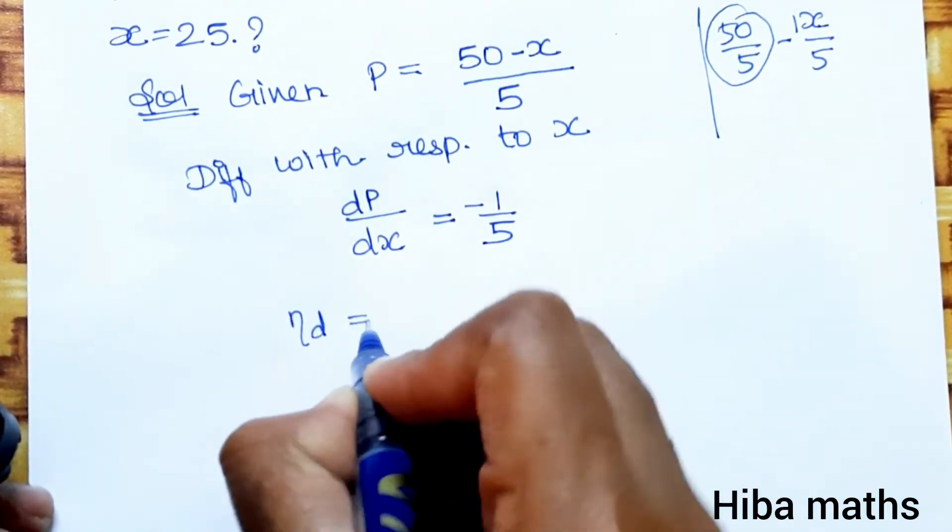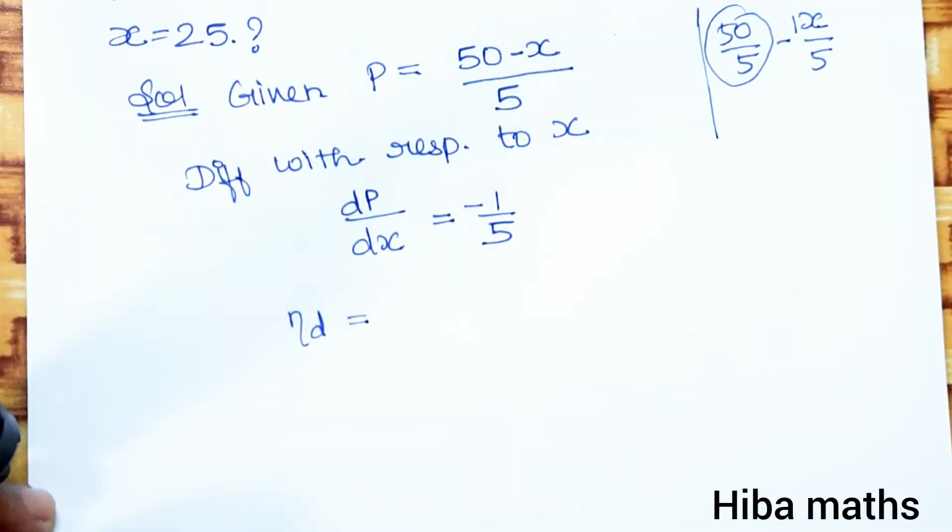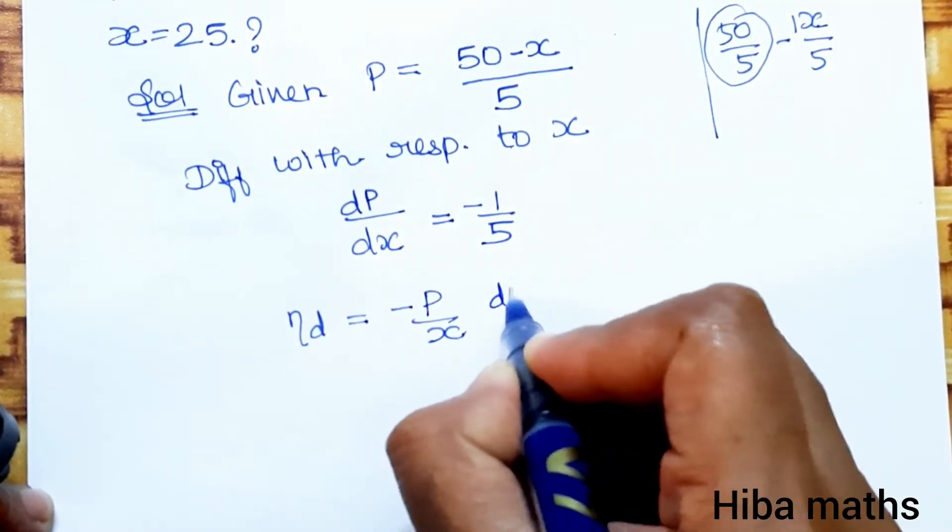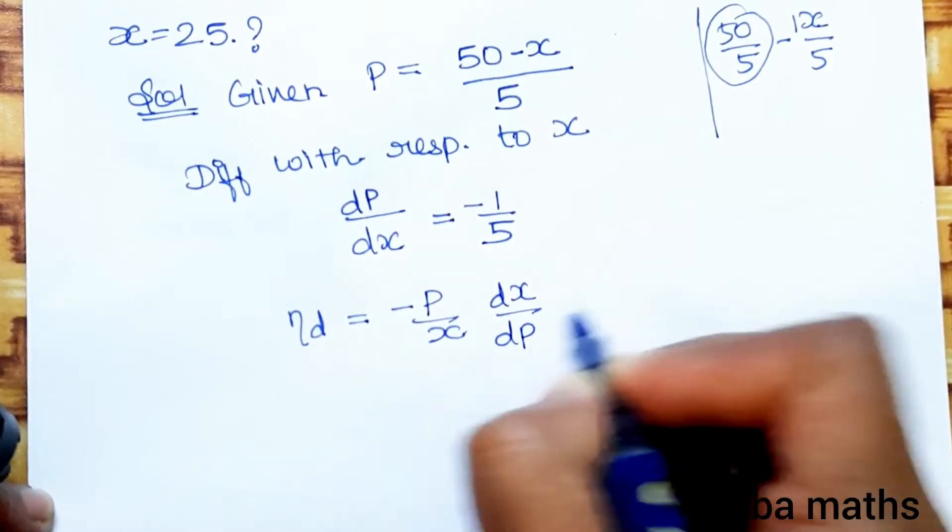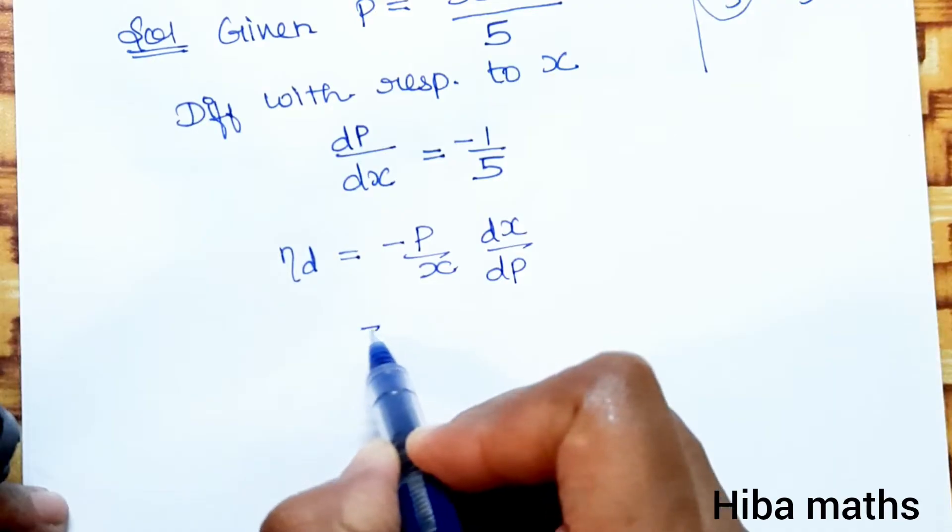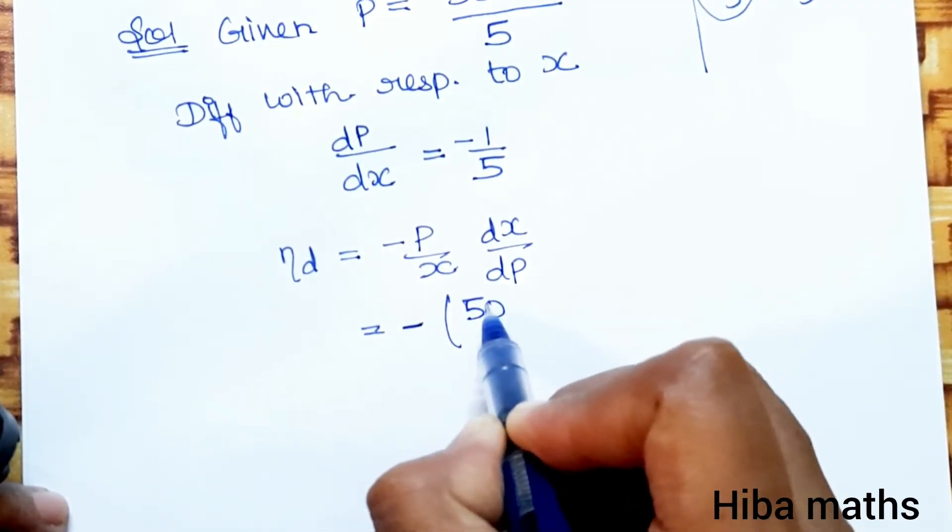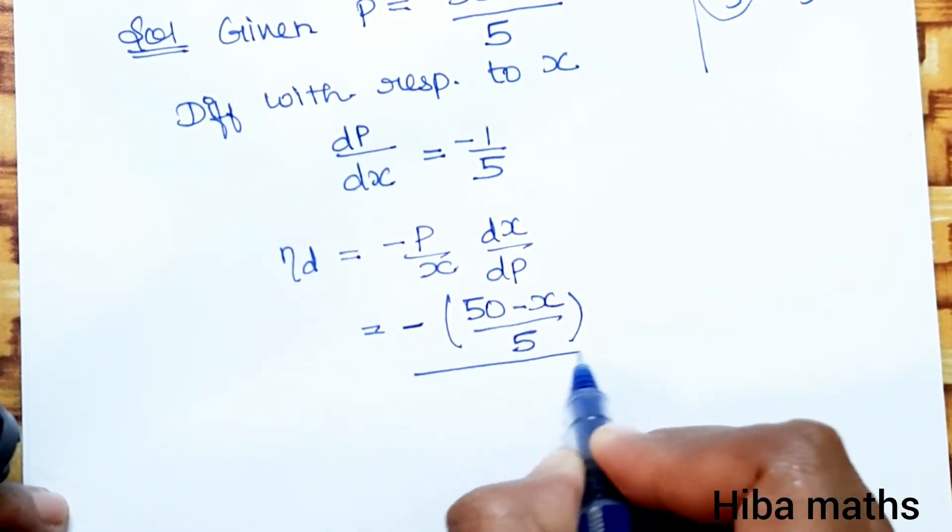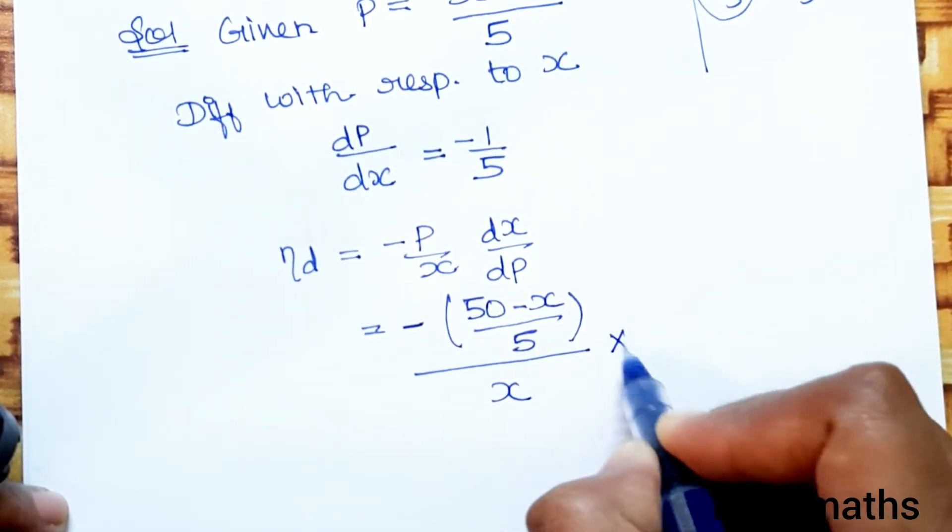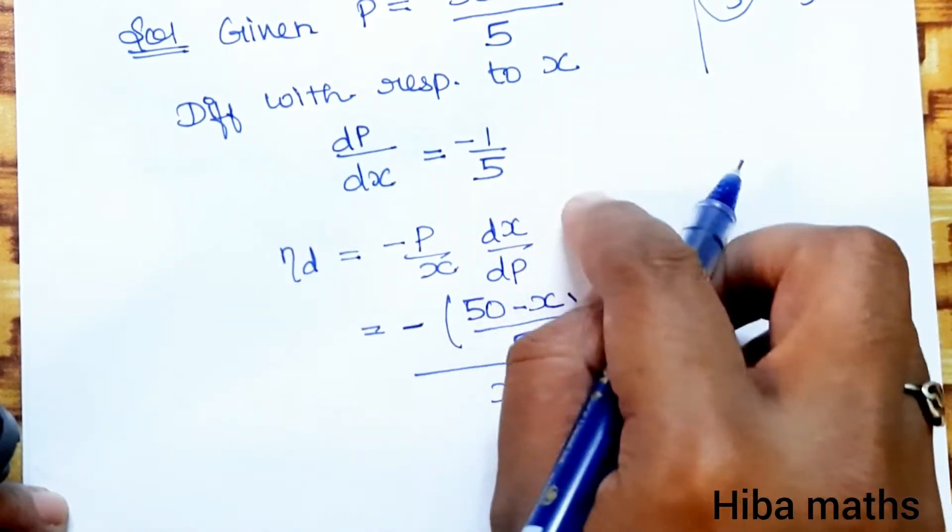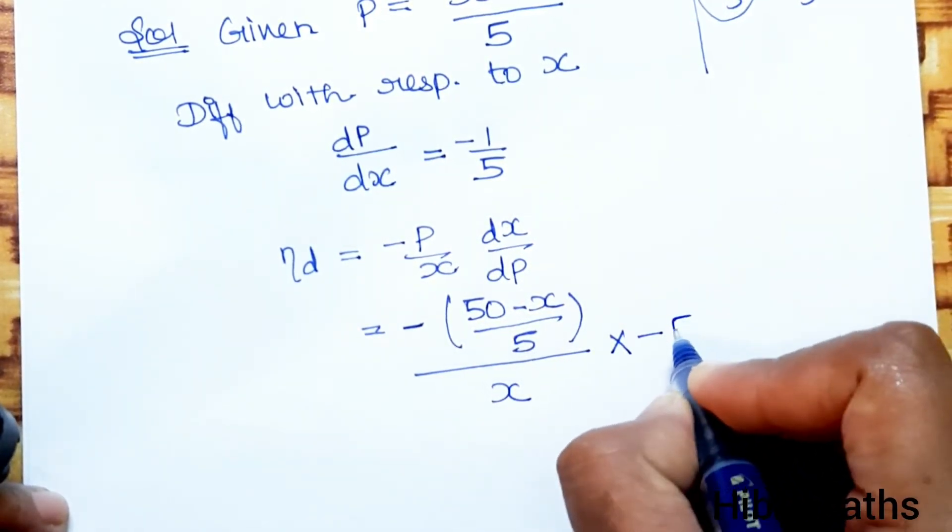Elasticity of demand η_d equals minus P by x times dx by dP. Now dx by dP is the reciprocal of dP/dx, so η_d equals minus P divided by x times the reciprocal. dP/dx equals minus 1/5, so taking reciprocal gives minus 5.